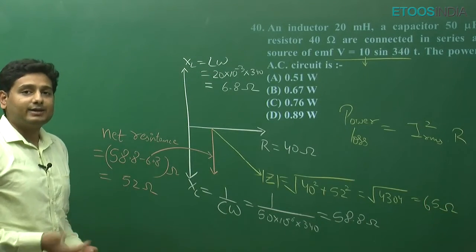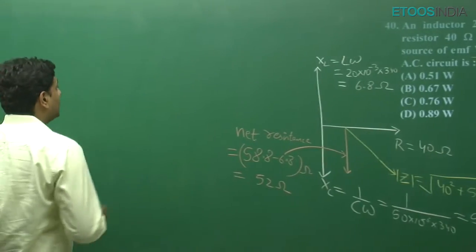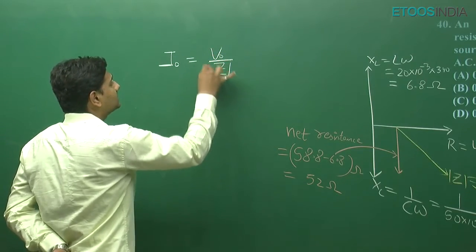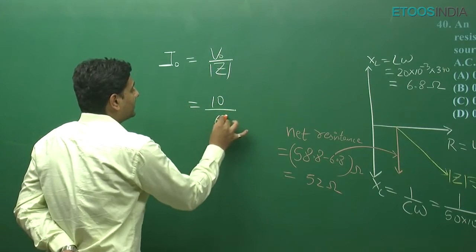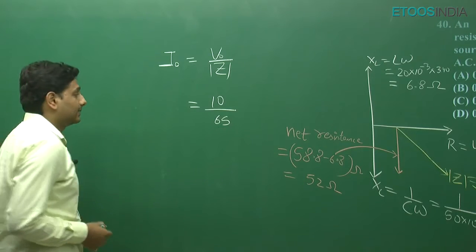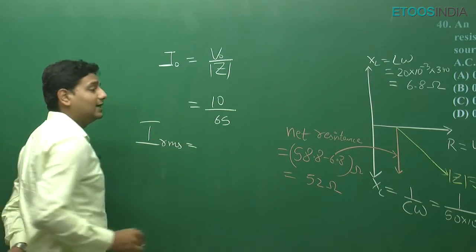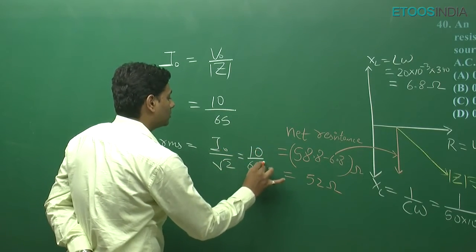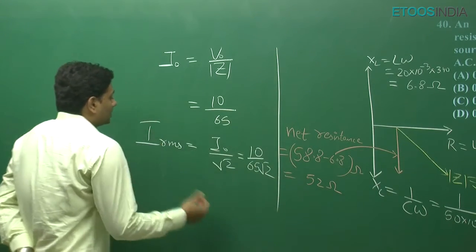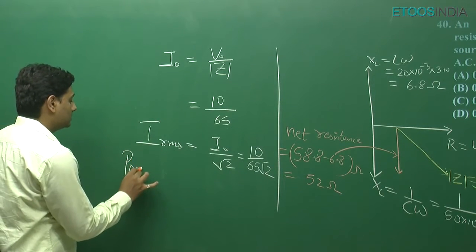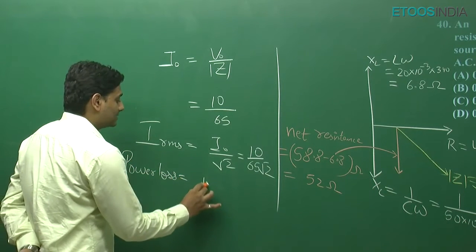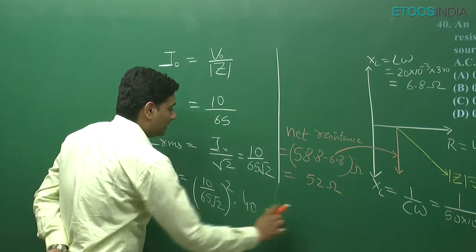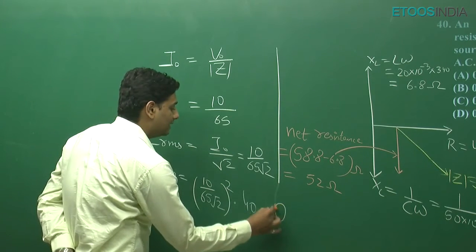So we have the impedance and net resistance. Now we need to find the current amplitude, which we write as I₀. It will be V₀ divided by impedance. V₀ value is 10 as given, and impedance we calculated as 65. So I₀ is found. Now we need to calculate IRMS for power. IRMS = I₀ / √2 = 10 / (65√2). Now for power loss: (10 / 65√2)² × 40, which gives approximately 0.43 W.